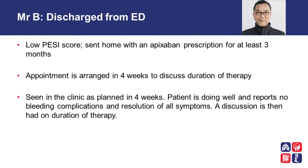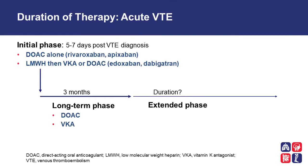He was seen as planned at four weeks and reported that he was doing well, with no bleeding complications on the apixaban and resolution of all his symptoms. A discussion was then had with Mr. B regarding how long to treat his venous thromboembolic episode. Duration of therapy for acute venous thromboembolism can be broken down into an initial phase, the three-month or long-term phase, and then the extended phase.